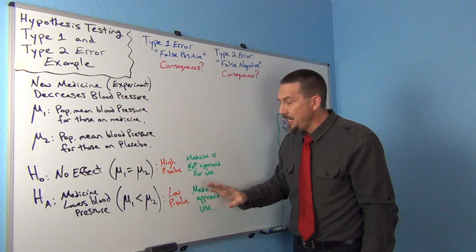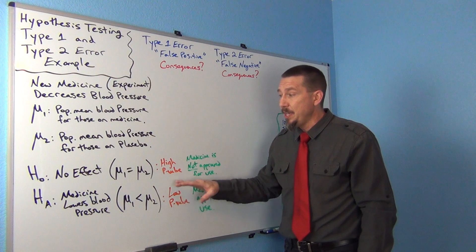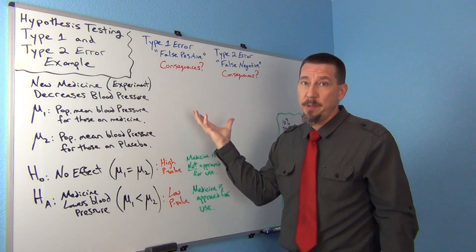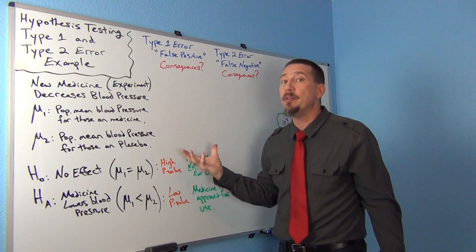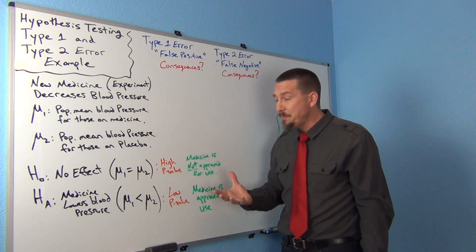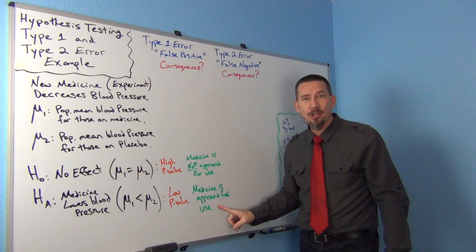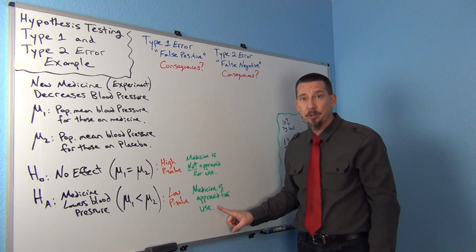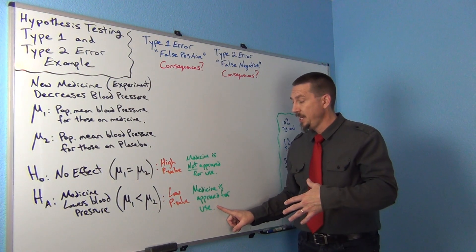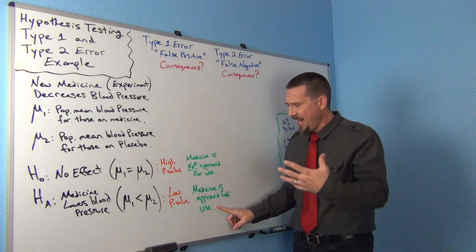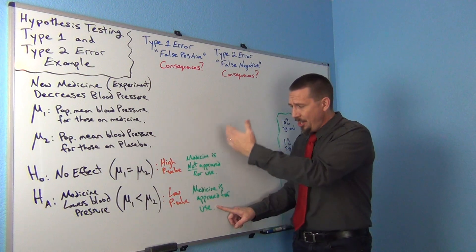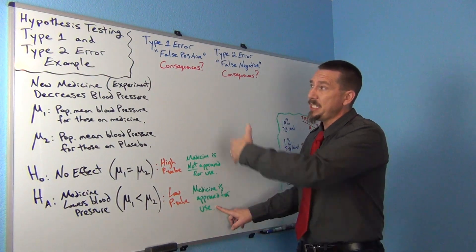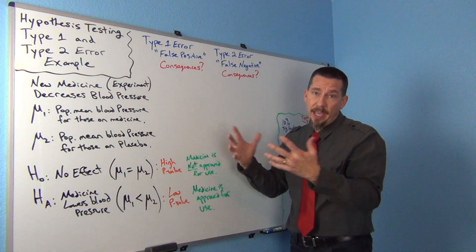In the people in the experiment, the medicine seemed to lower their blood pressure. But maybe when this medicine hits the open market and millions of people start taking it, we'll see many people it has no effect on. So that would be a type 1 error — the sample data and the experiment indicate the medicine should be approved, but it's a mistake. I think it's true based on my sample data and statistics, but it turns out later that it's not. Maybe if we did the experiment again, it would indicate no effect.